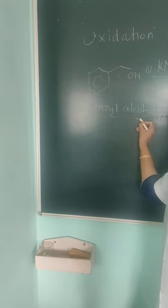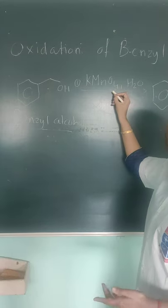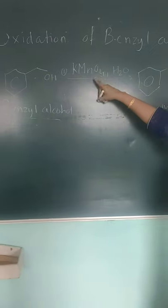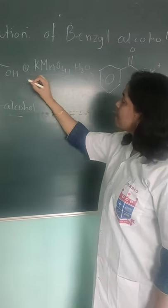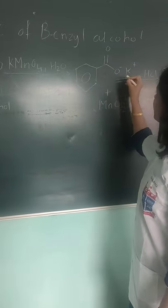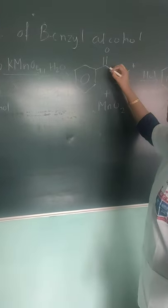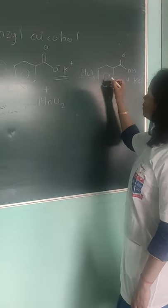This is the structure of benzyl alcohol. We are going to use potassium permanganate as the oxidizing agent, which itself is going to get reduced to form manganese dioxide. At the same time, benzyl alcohol is going to get oxidized to benzoic acid. Since the reaction medium is having potassium ions, it is going to be in ionized state to give COO⁻ K⁺, forming an ionic bond with potassium ions.